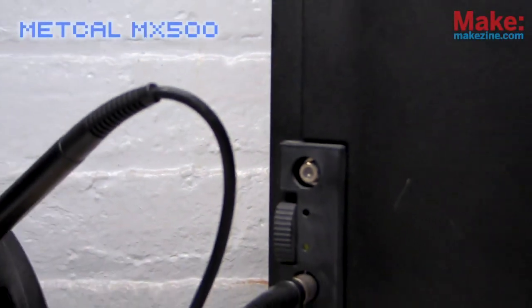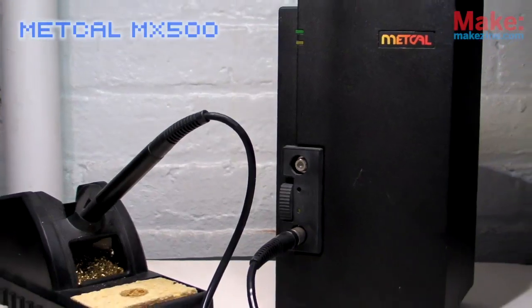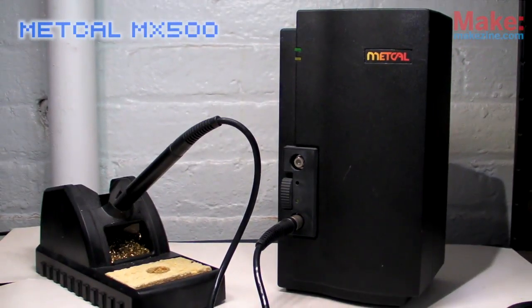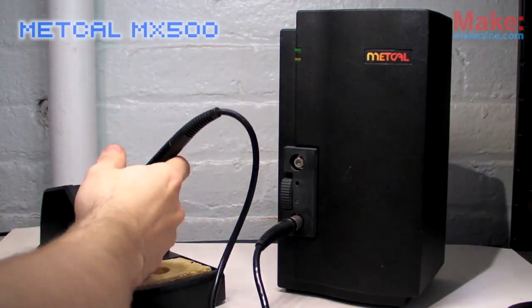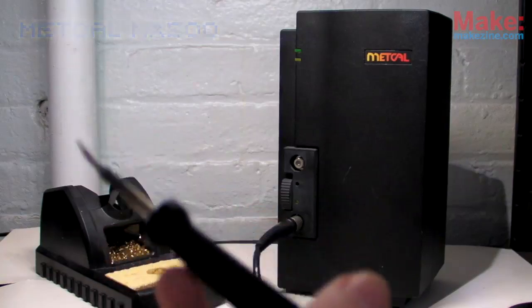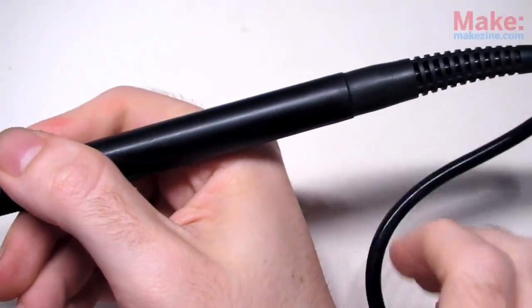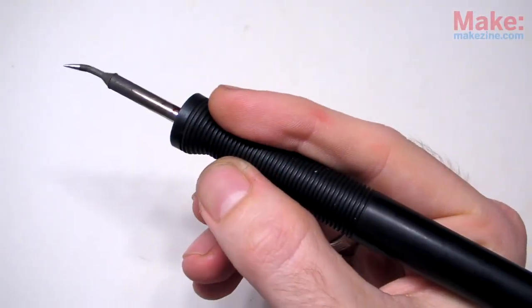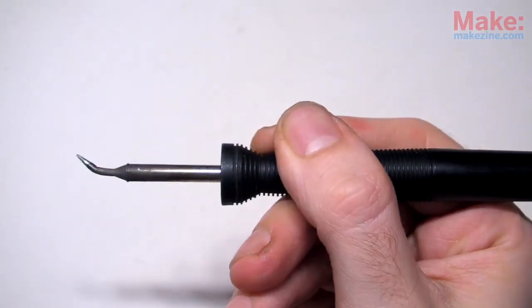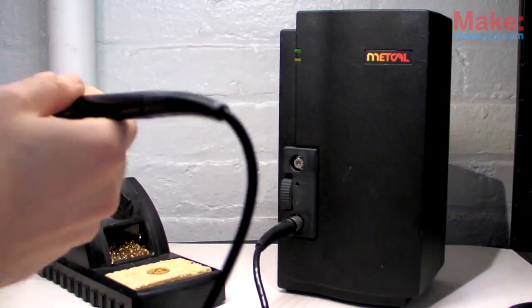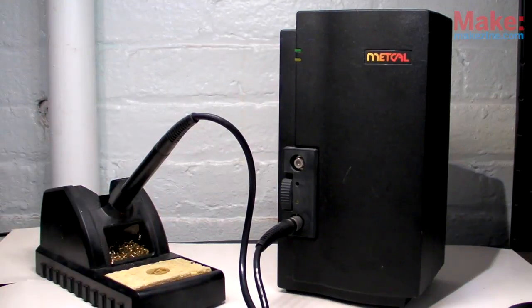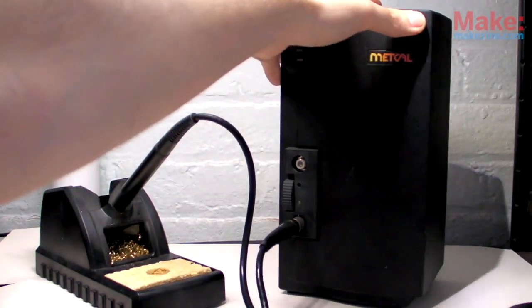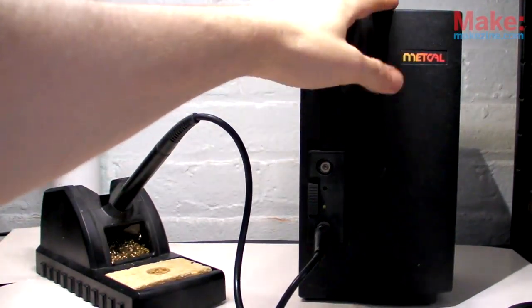The iron I use nowadays is this Metcal MX500, and it is awesome. It heats up in seconds, automatically shuts off when left unused, has an incredibly flexible cable, and a super slim and lightweight handpiece, which makes it a joy to work with. These go for around $500 new, but second-hand units go for hundreds less on eBay, which is where I found this one.